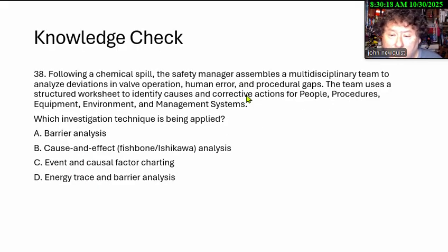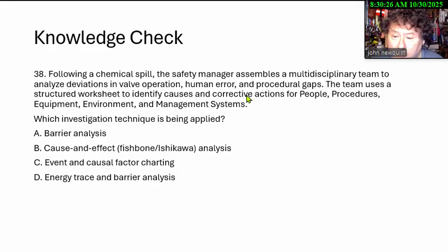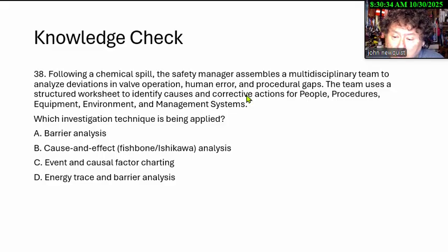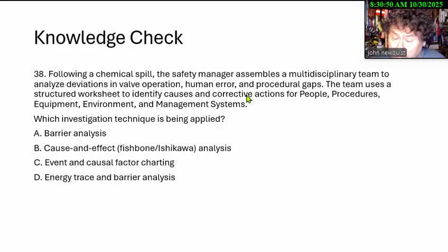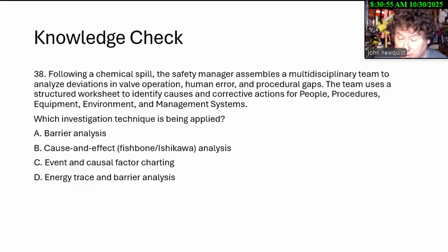This one's a little tougher. Following a chemical spill, the safety manager assembles a multidisciplinary team to analyze deviations in valve operations, human errors, and procedural gaps. The team uses a structured worksheet to identify causes and correctives for people, procedures, equipment, environment, and management systems. Which investigative technique is being applied? Options: barrier analysis, cause-and-effect fishbone and Ishikawa analysis, event and causal factor charting, or energy trace and barrier analysis. You have to know what all of these are on these tests — you may not use more than three in your lifetime, but you have to at least know what they are.